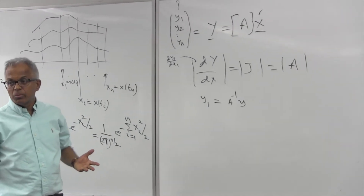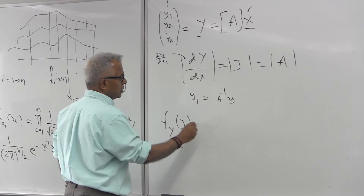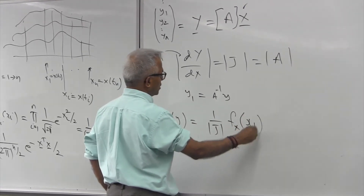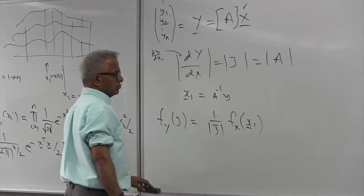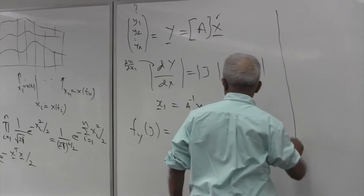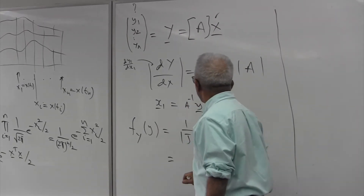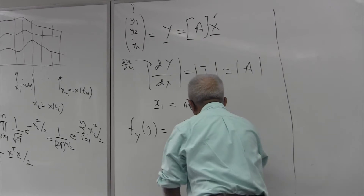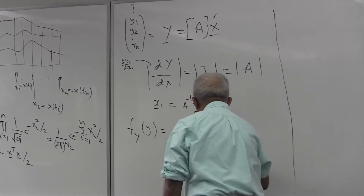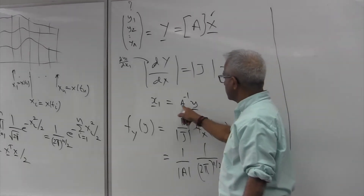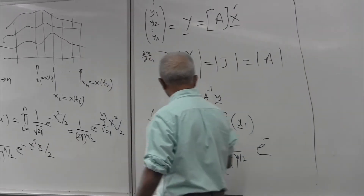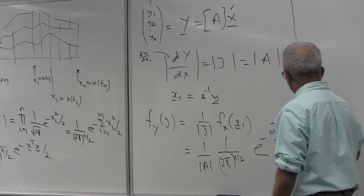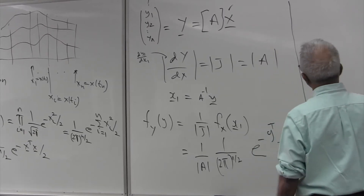Going back to the change-of-variables formula, the density function of y is (1/|Jacobian|) times the density function of x evaluated at x = A^{-1} y. So x^T x becomes (A^{-1} y)^T (A^{-1} y), which is y^T (A^{-T} A^{-1}) y, divided by 2.